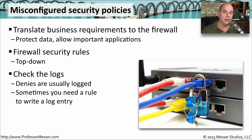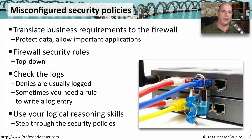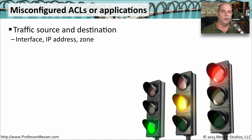Some firewall rule bases are very large, and if someone is having a problem communicating through the firewall, you may have to start at the very top of the list and use your own reasoning skills to determine where the traffic is getting denied. Many firewall access control lists or security rule tuples will include source IP address, destination IP address, interface information, or other details — so you want to find as much of that information as possible when determining why traffic might be allowed or dropped.